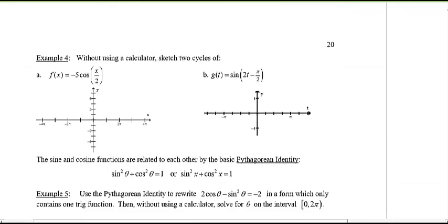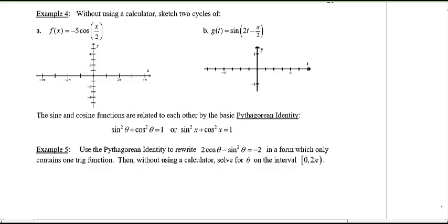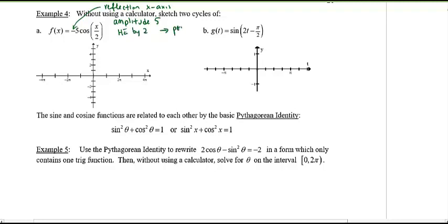Quick review — sketch these two graphs. For part (a), the 5 in front represents amplitude of 5. The negative sign means a reflection in the x-axis. The factor of 1/2 next to x is a horizontal expansion by a factor of 2, so the period doubles to 4π. Using the formula: period = 2π divided by |b| = 2π divided by 1/2 = 4π.